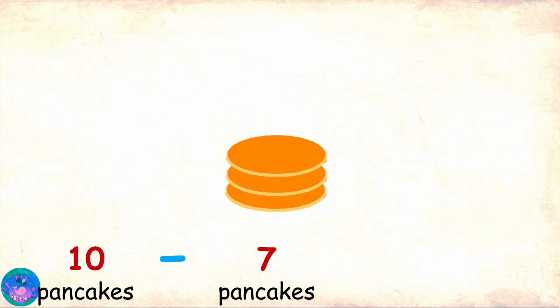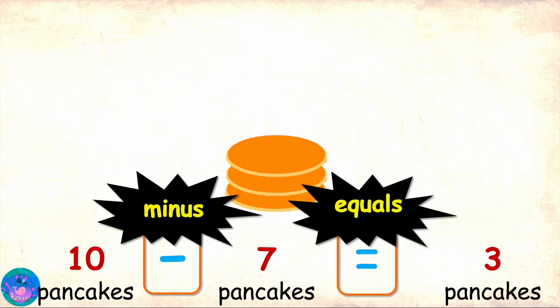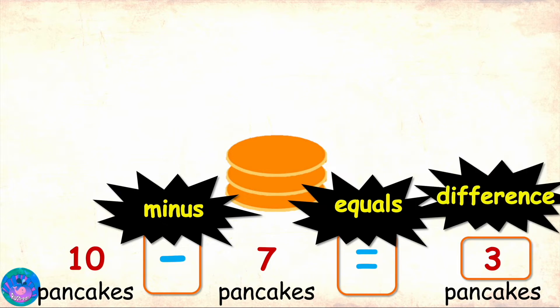In math, we can write it as 10 pancakes minus 7 pancakes equals 3 pancakes. This symbol is called minus and it is the symbol for subtraction. We already know that this symbol is called equals or equal to. And the answer that we get on subtraction is called the difference.